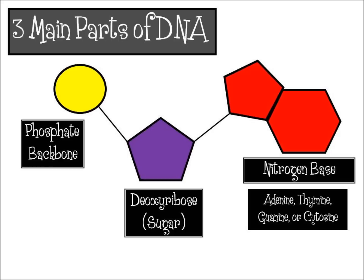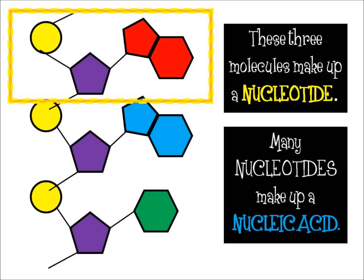Those four nitrogen bases are usually just abbreviated A, T, G, and C. So those three chemicals — those three small molecules — put together make a nucleotide, which is the basic unit of DNA.